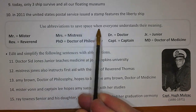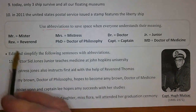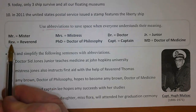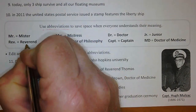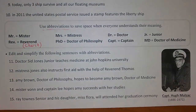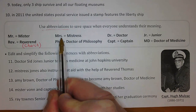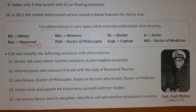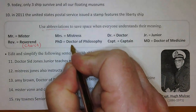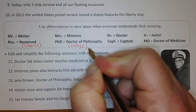Use abbreviations to save space when everyone understands their meaning. Let me underline our topic: abbreviations. 'Mr.' with a period. 'Rev.' — a reverend is a church leader. 'Mrs.' stands for 'mistress' — usually used when someone is married. 'Ph.D.' stands for Doctor of Philosophy — this is a college professor, someone who has gone to school for many years and earned that degree.